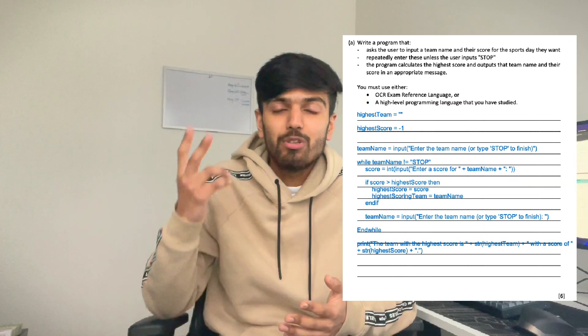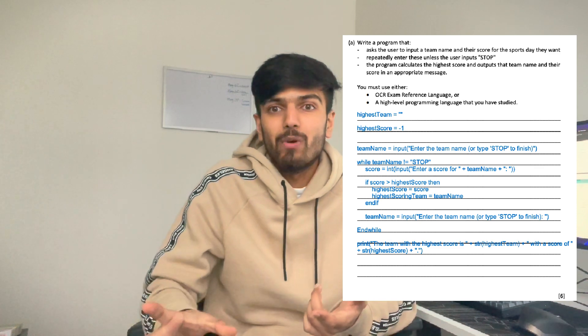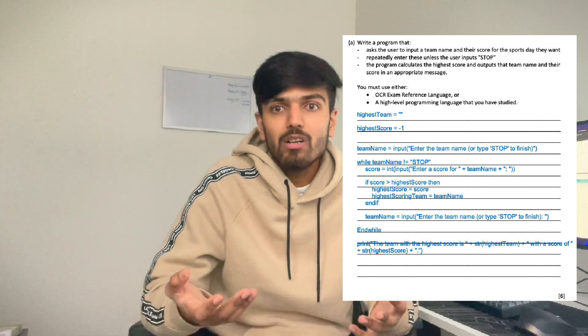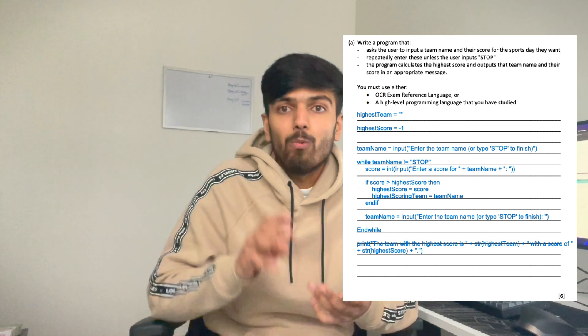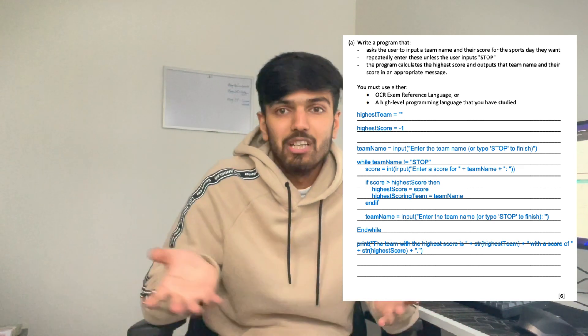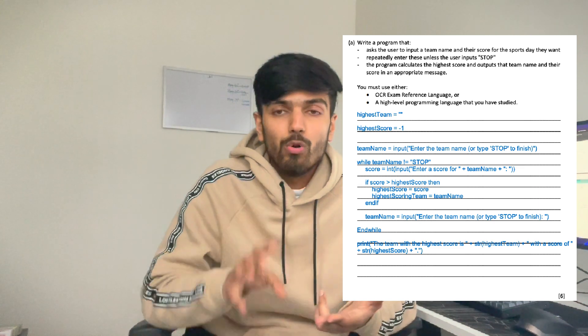Here is my answer. As you can see, there are two initial variables which store the highest score and the highest team. We then have a while loop, because from the second bullet point it says it stops when the user enters 'stop'. Before that we ask for input from the user — we ask them what team they want — and while the input is not equal to 'stop', that's our stopping condition.